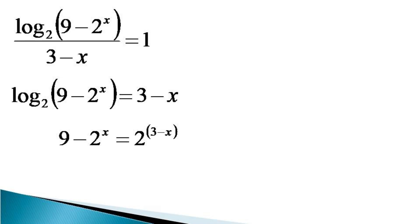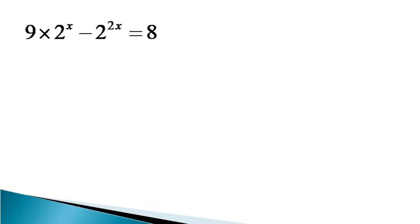Now the logarithmic equation is reduced to an exponential equation. We multiply both sides by 2 raised to the power x, and the equivalent equation becomes 9 times 2 raised to the power x minus 2 raised to the power 2x is equal to 2 raised to the power 3, which is equal to 8.